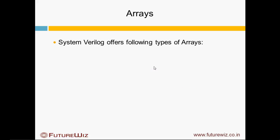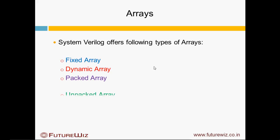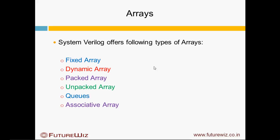System Verilog offers the following types of Array: Fixed Array, Dynamic Array, Packed Array, Unpacked Array, Queues, and Associative Array.